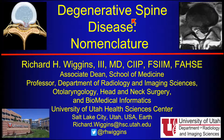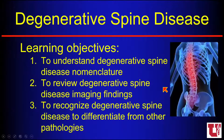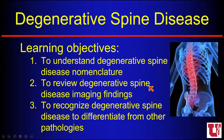Hello, this is Rick Wiggins from the University of Utah, and we're going to talk about degenerative spine disease and the importance of nomenclature when we talk about degenerative spines. We're going to talk about the importance of this nomenclature and how we discuss degenerative spine cases, review degenerative spine disease imaging with correlating graphic CT and MRI, and how to recognize and differentiate degenerative spine disease on our imaging studies.